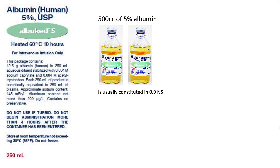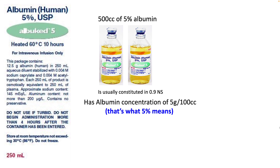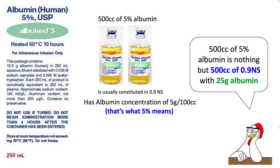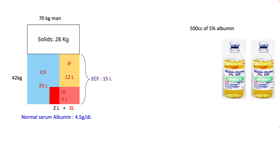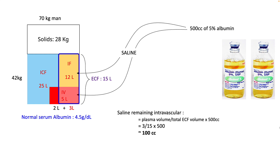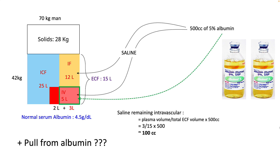So what about 5% albumin? Albumin is normally constituted in normal saline, and since it is 5%, you have 5 grams per 100 cc of albumin — a total of 25 grams. So 500 cc of 5% albumin is nothing but 500 cc of normal saline with 25 grams of albumin in it. The saline part is going to redistribute in your ECF as discussed, so only 100 cc of it will remain intravascular. The albumin is going to remain intravascular and will have that 'magic pull.' Let's figure out how much fluid it can pull from surrounding tissues.